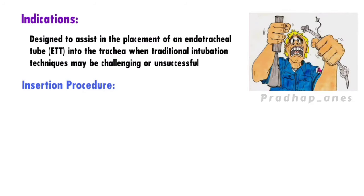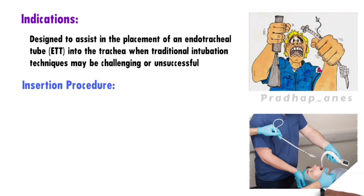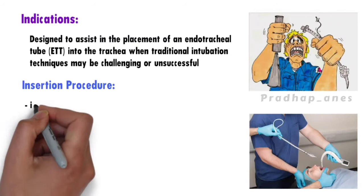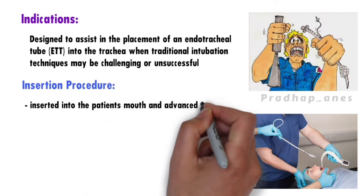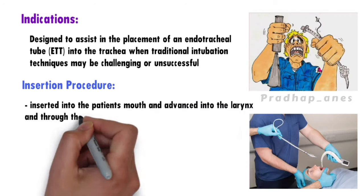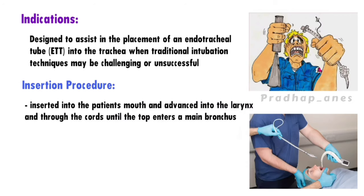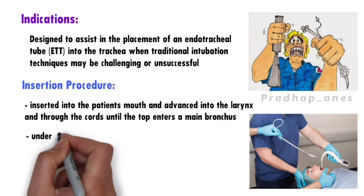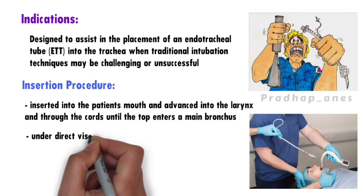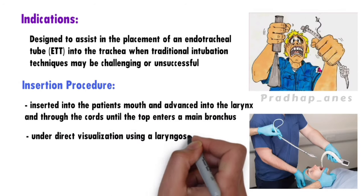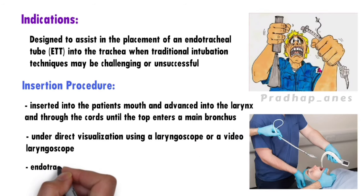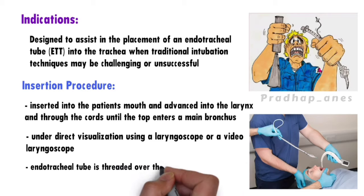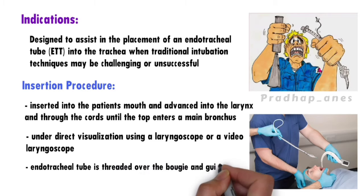Insertion procedure: During intubation, the Bougie is typically inserted into the patient's mouth and advanced into the larynx and through the cords until the tip enters a main bronchus. This is done under direct visualization using a laryngoscope or a video laryngoscope. Once the Bougie is correctly placed, the endotracheal tube is threaded over the Bougie and guided into the trachea.